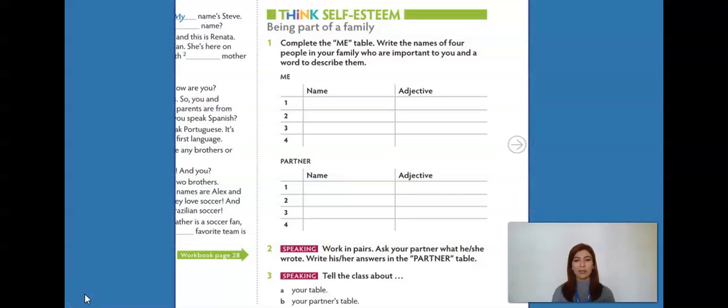Now we are on page 33 of your student's book. And if you don't have it, it's this activity right here of Think Self-Esteem. Let's take a look at what it says. So, complete the me table. Write the names of four people in your family who are important to you and a word to describe them.